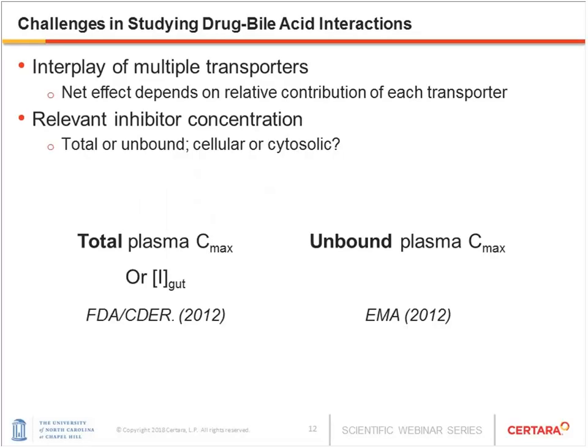This brings to a major challenge in studying drug-bile acid interactions. Because of the interplay of multiple transporters, the net effect of the inhibitor depends on the relative contribution of each transporter and the relative inhibitory potency against each transporter. Another challenge is the debate around which type of inhibitor concentration to use for prediction. Should we use total or unbound inhibitor concentration in the cell, cytosol, or plasma? There is no consensus between the FDA and EMA guidance regarding intestinal efflux transporter-mediated drug interactions.